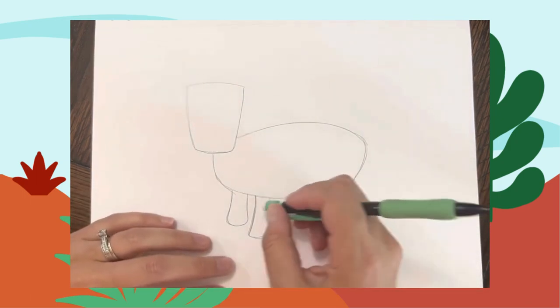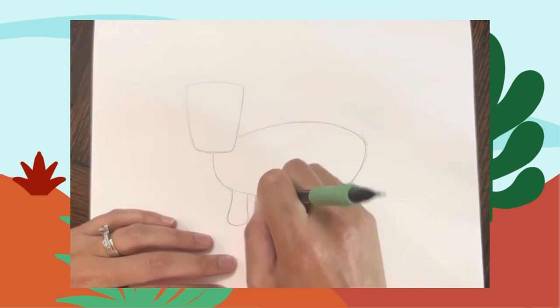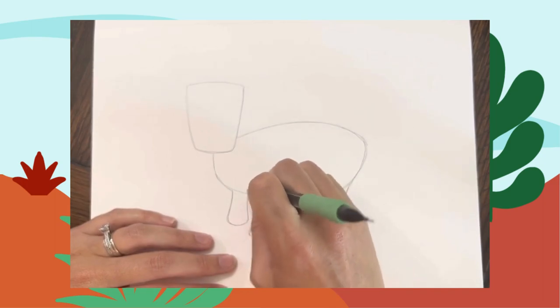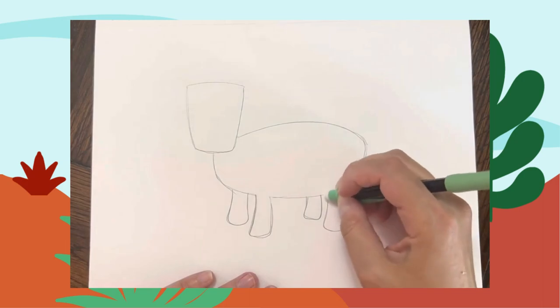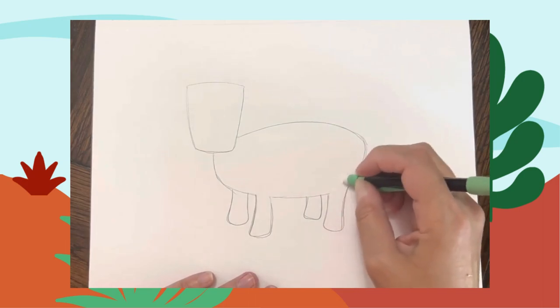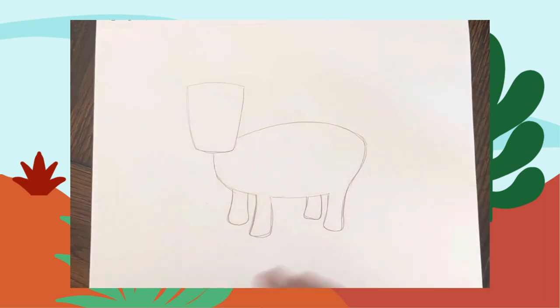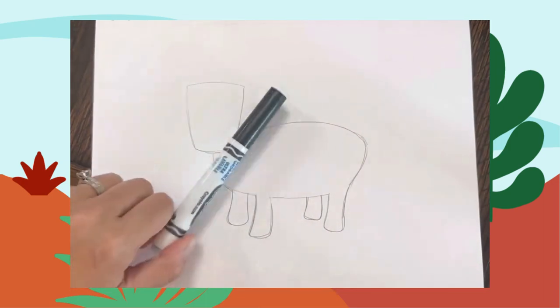I'm almost done with my pencil. I'm going to take my eraser and erase the lines that are on the long legs. I'm going to erase both lines going across the long legs. We'll keep those lines across the back legs. All right, let's get our black marker out.